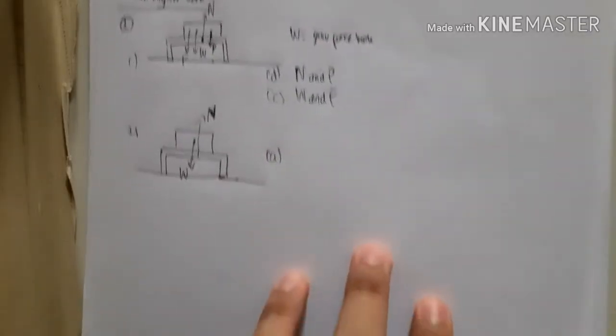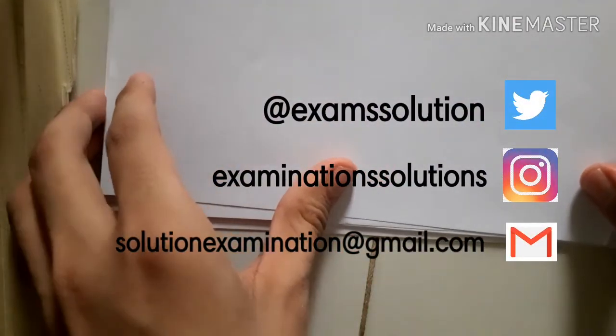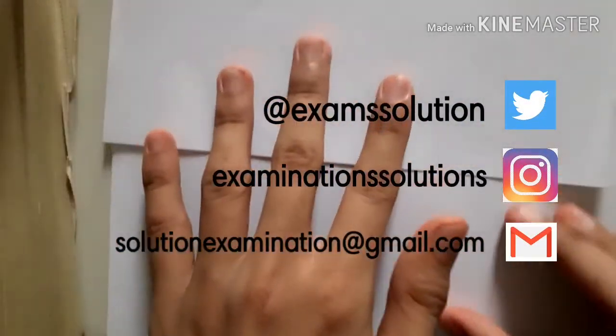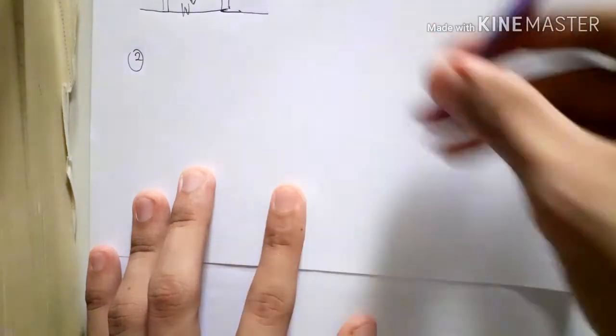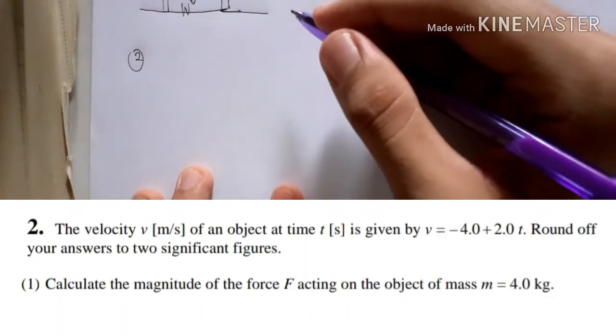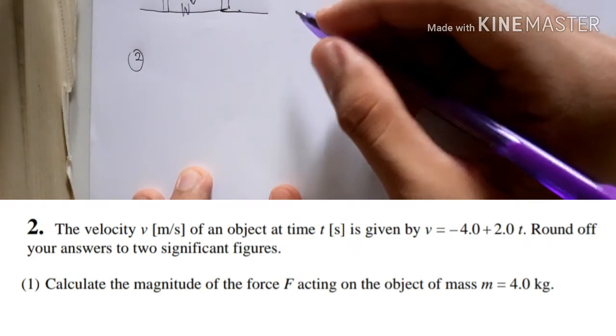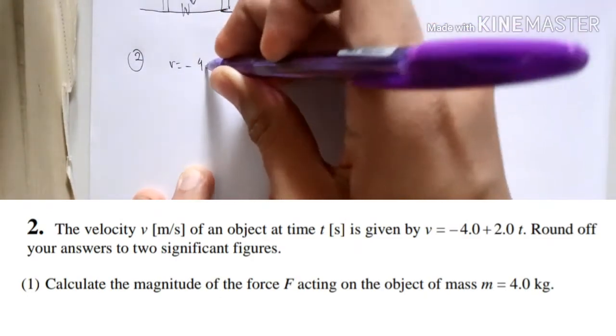Hello everyone, welcome to Cousin Physics 2016 and now we are going to discuss part 2 of the 2016 paper. For 2016 paper part 2 here, it says the velocity v in meter per second of an object at time t is given with the formula there, minus 4 plus 2t.